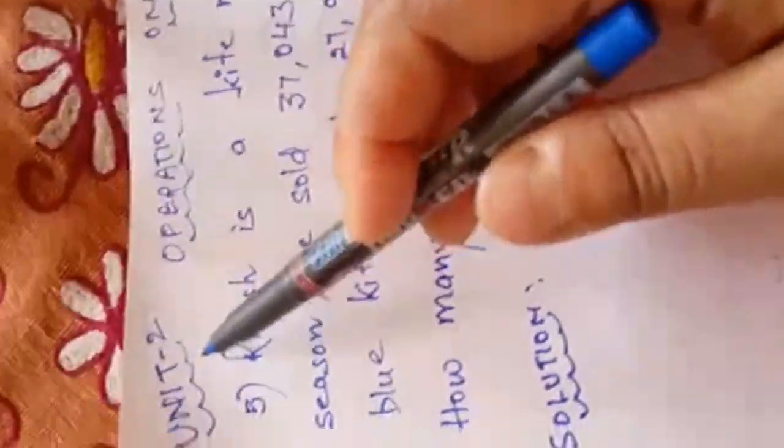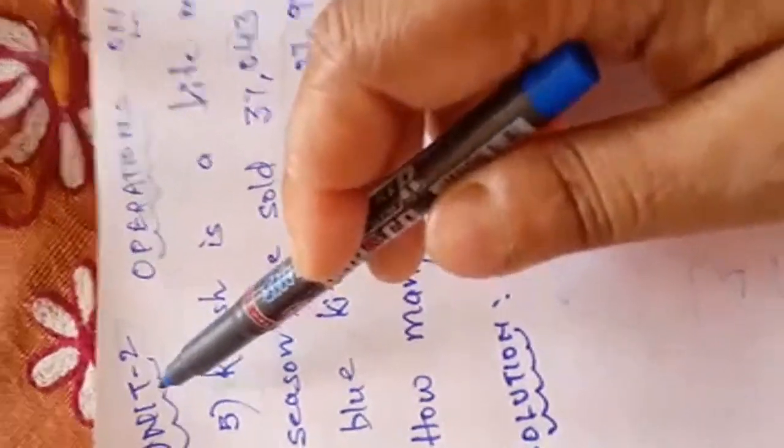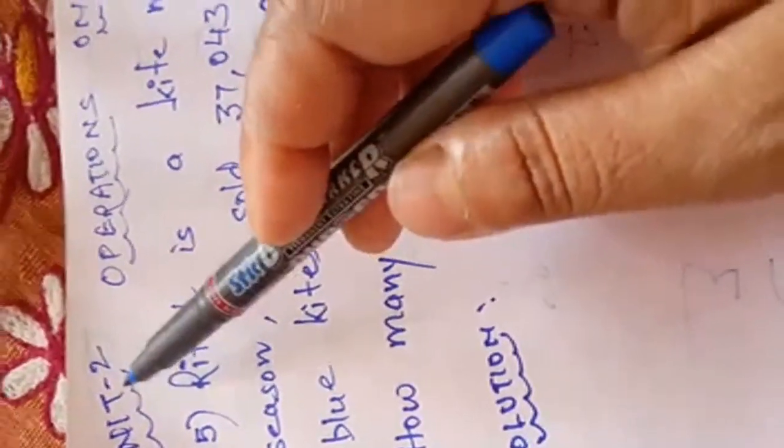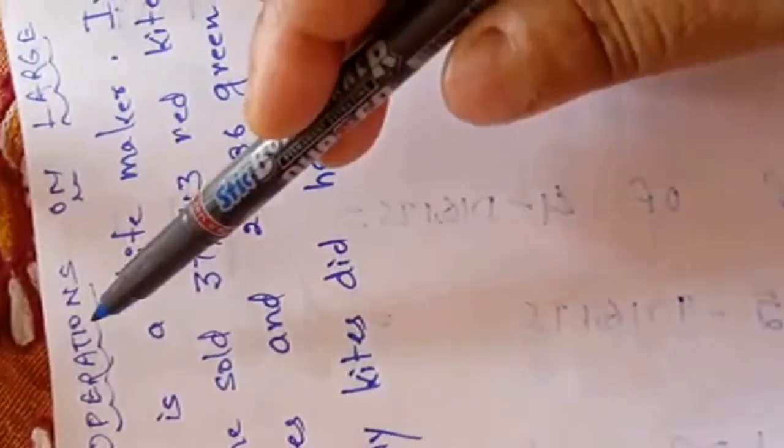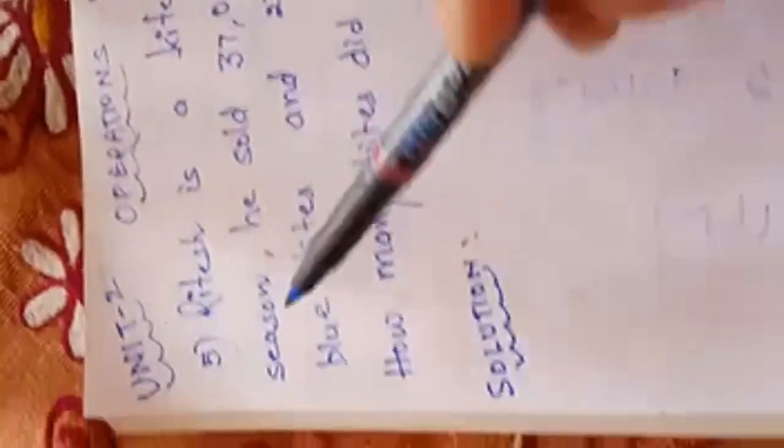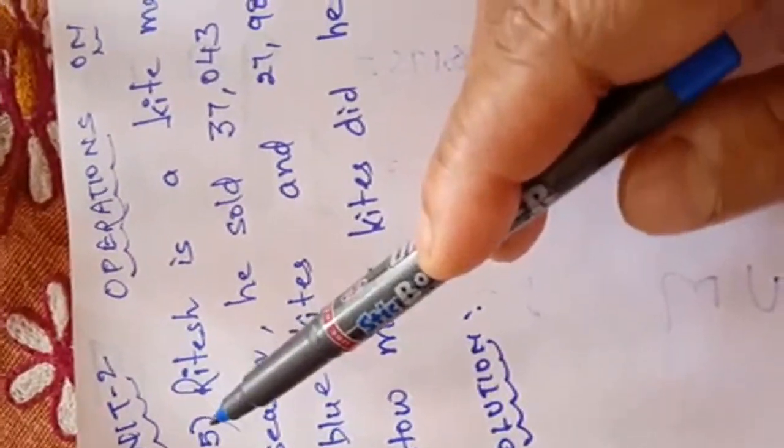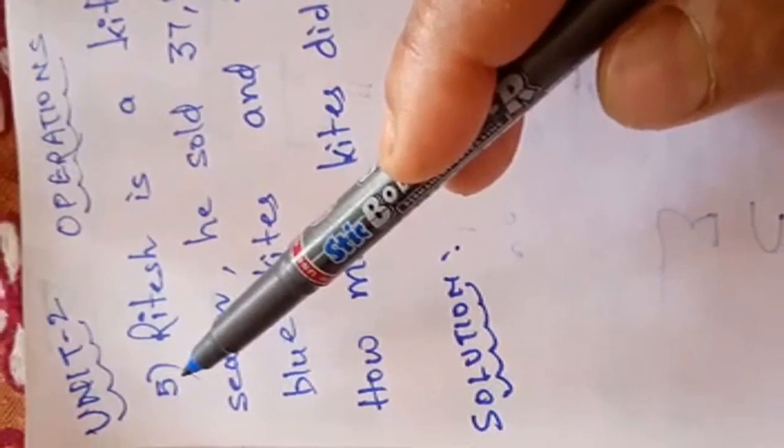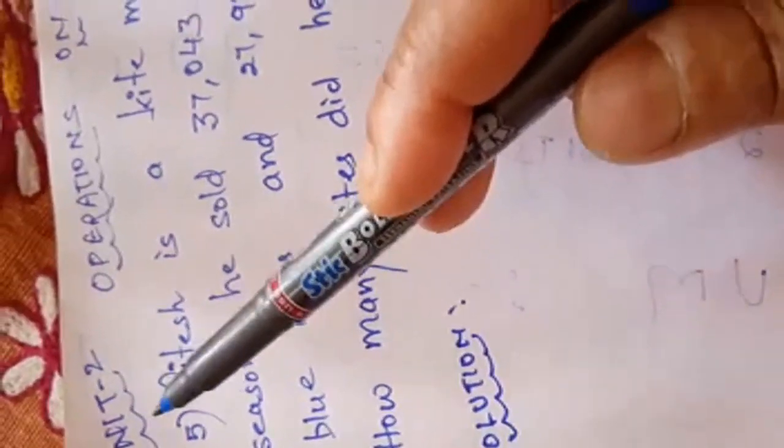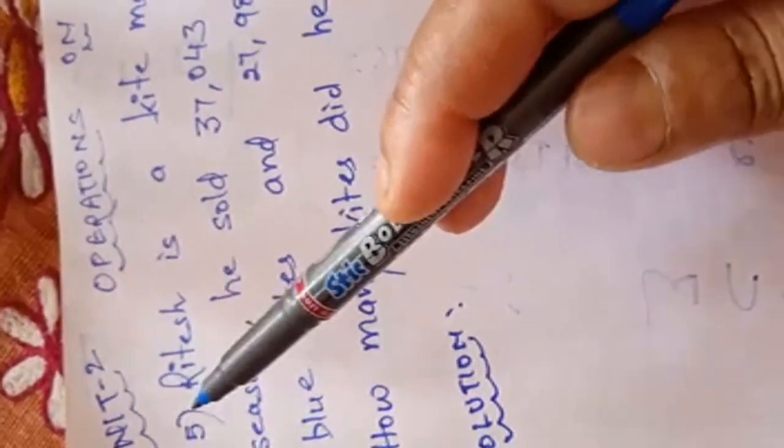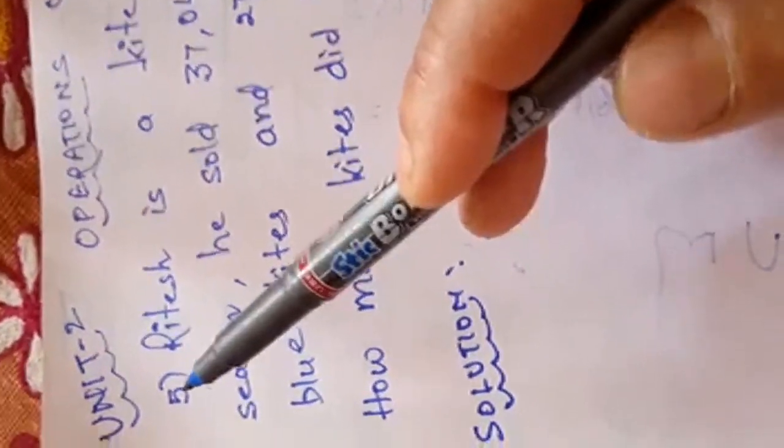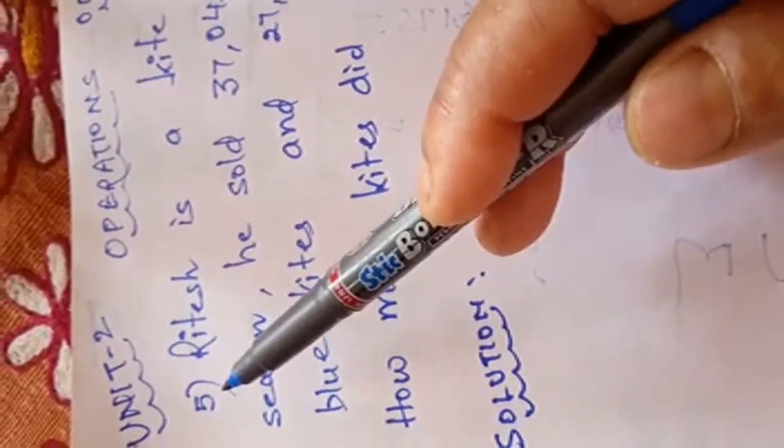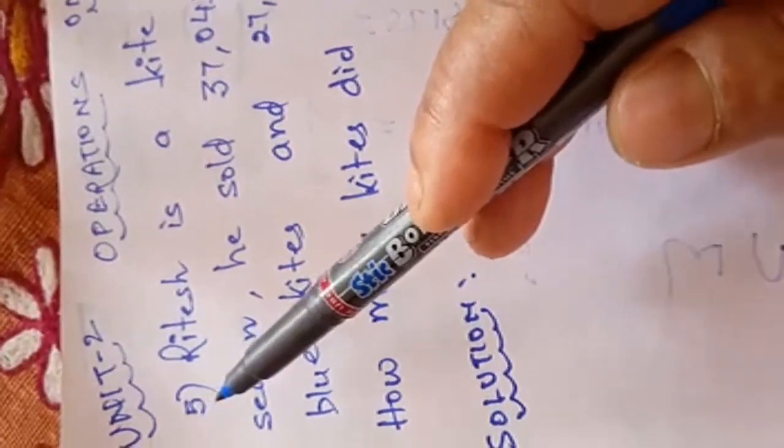Good morning, children. Children of class 5, today I am going to start unit 2. Topic is operations on large numbers. Earlier I have discussed question number 1, 2, 3 up to 4 and I have given you the assignments also. Now today I am going to deal with question number 5 of page number 14.